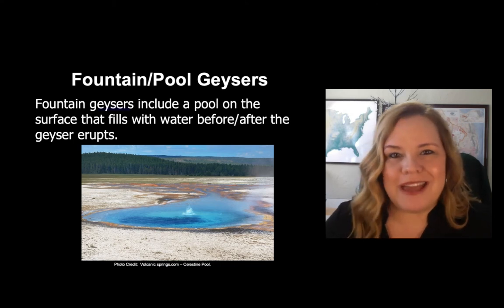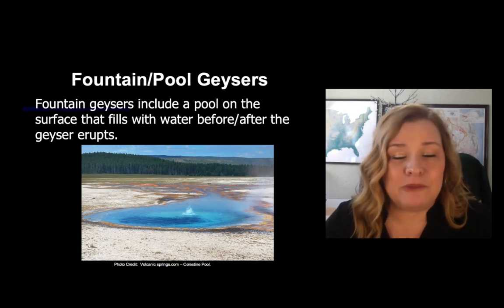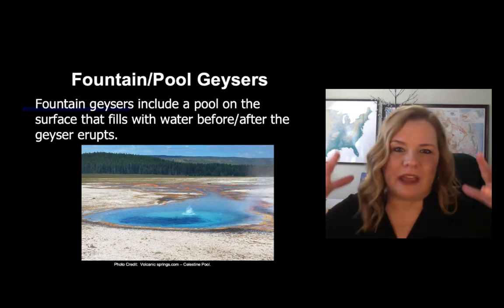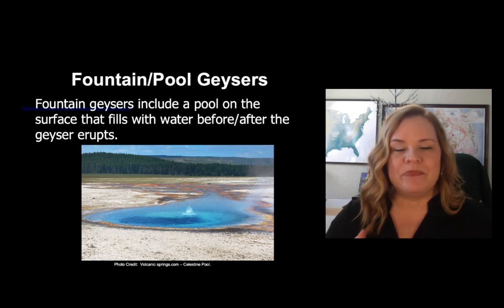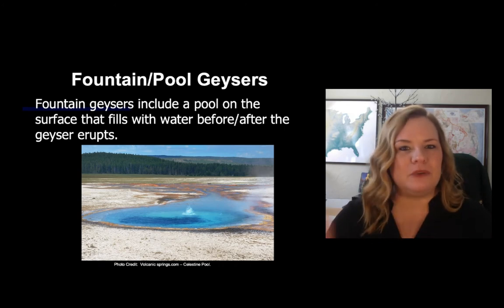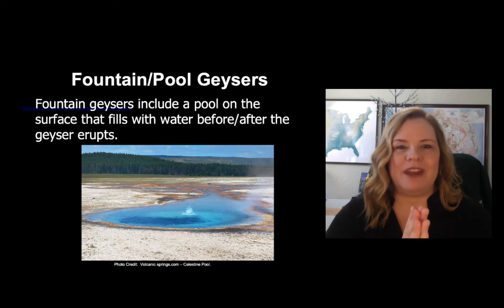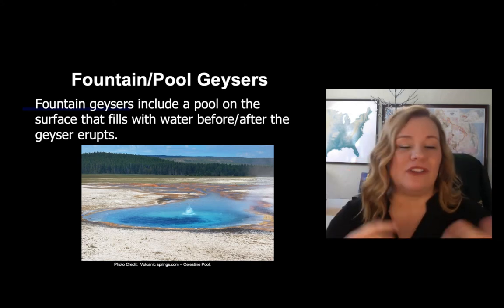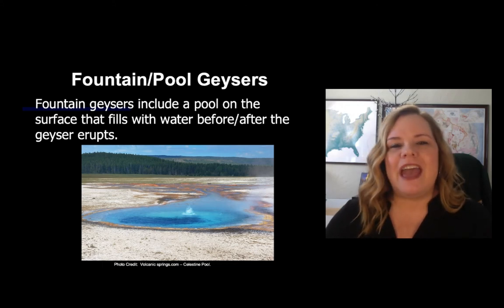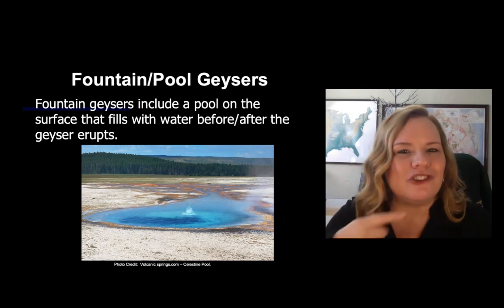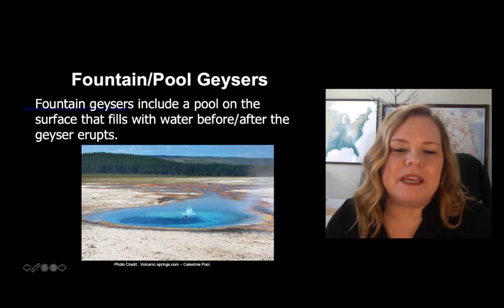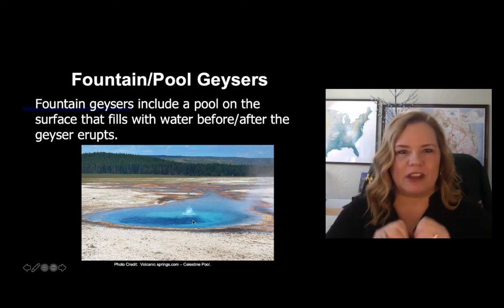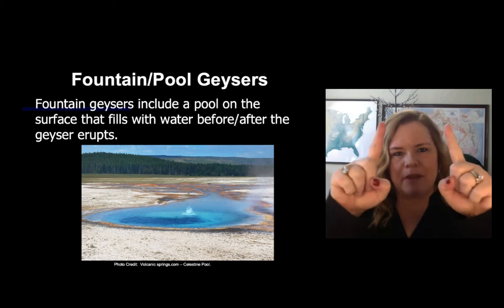Fountain slash pool geysers work almost like a regular fountain. Imagine the drain at the bottom of a pool is the opening for this type of geyser. Pressure builds up and comes through the constriction because of geyserite, then erupts up at the surface and sprays in all directions — instead of coming straight up from a cone like a cone geyser.